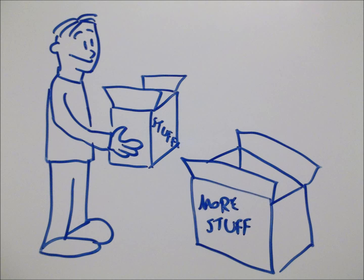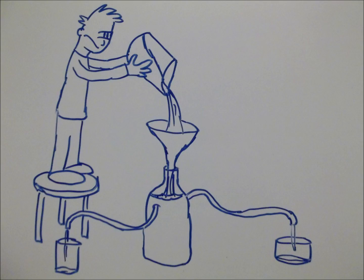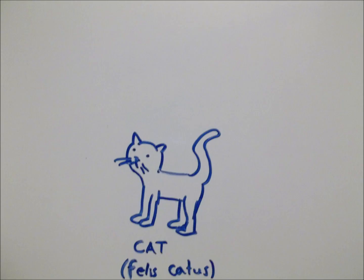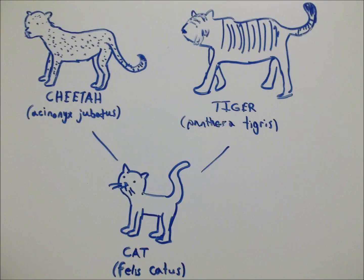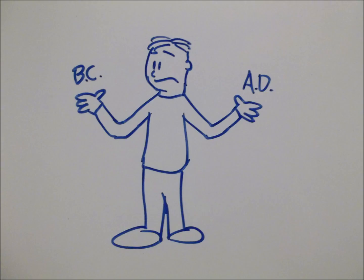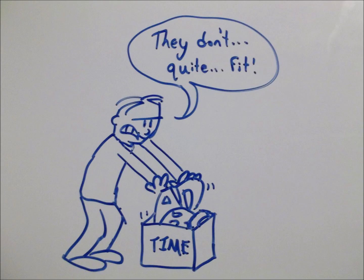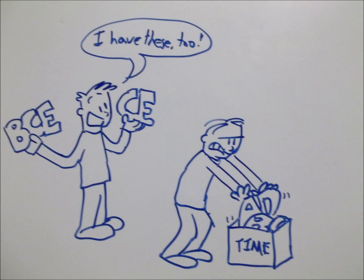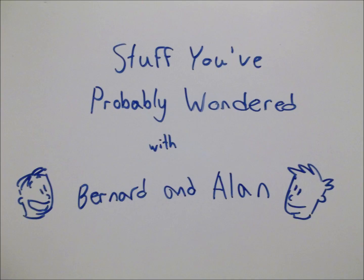We as humans just love to put things into categories. Everything has to have a name, and everything has to be grouped into bigger and bigger groups. We do it all the time, from how we classify forms of life to how we organize the history of the Earth. So when it comes to organizing time, what's the big deal with B.C. and A.D.? Can't we just have one single counting of years without having to split it in half? And what makes it different from C.E. and B.C.E.? Is there a better way of doing it? That's what we're going to find out on this episode of Stuff You've Probably Wondered.